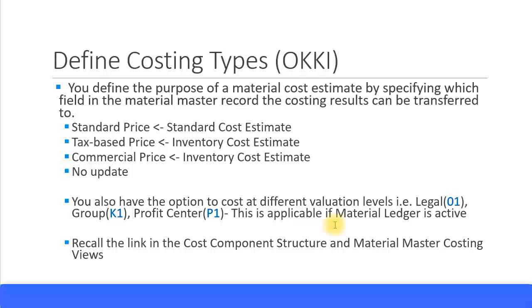I have given a separate presentation on how to configure the material ledger — you can follow that in the series of presentations. Now recall the link in the cost component structure where we defined what type of estimate is active, how relevant it is, and to which costing views in the material master record the results are updated. Let me show you this in the configuration.